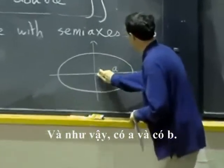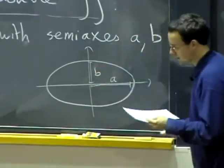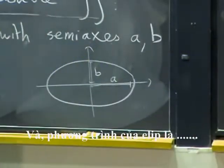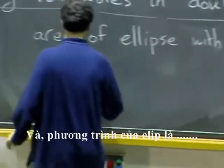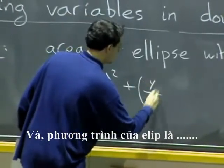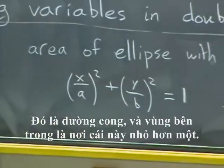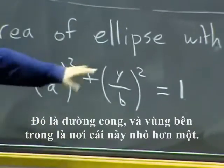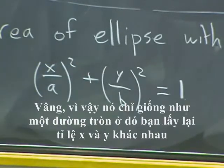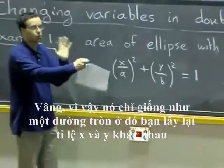And so there's a and there's b. And the equation of that ellipse is (x/a)² + (y/b)² = 1. Well, that's the curve. And the inside region is where this is less than one. So it's just like a circle, but where you have rescaled x and y differently.